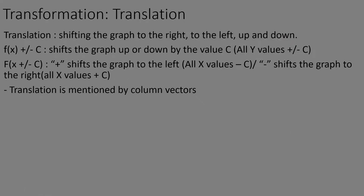Now we have transformations of graphs. Transformation involves moving the graph around. The first type is translation, which refers to shifting the graph up, down, left, or right. f(x) plus or minus c shifts the graph up or down by c — all y values are added or subtracted by c.